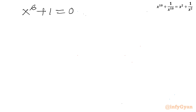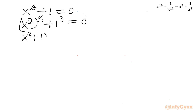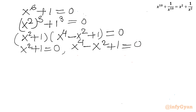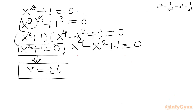For x^6 + 1 = 0, I can write (x^2)^3 + 1^3 = 0. Now applying the a^3 + b^3 formula: (x^2 + 1)(x^4 - x^2 + 1) = 0. Conclusion: x^2 + 1 = 0, which gives x = ±i — a repeated solution.